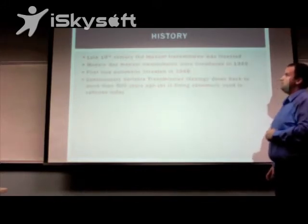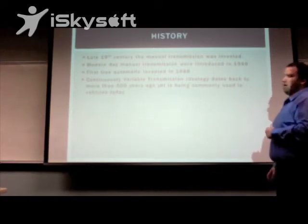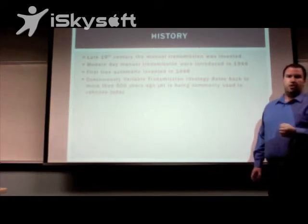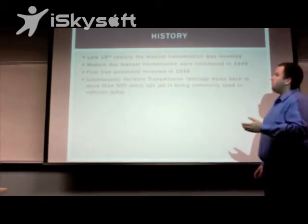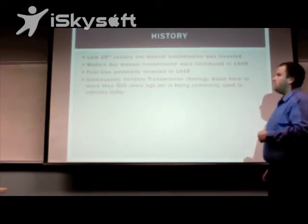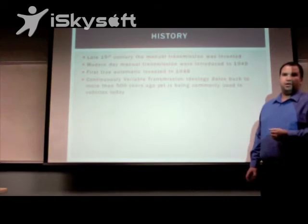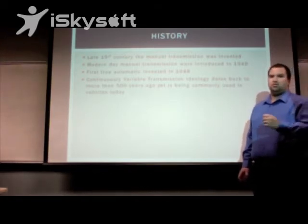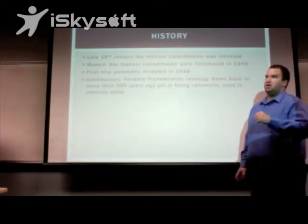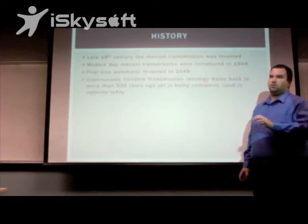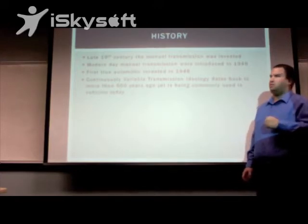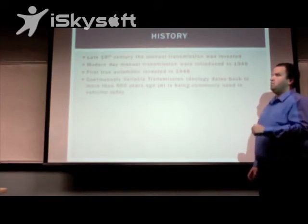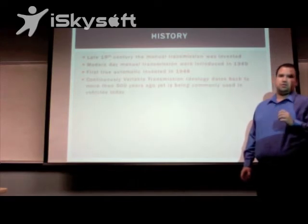The manual transmission had its start as early as the late 19th century, and the modern-day manual transmission as we know it was invented in 1949 when Ferdinand Porsche submitted the patent for the ring-style synchronizer. The first true automatic was made available in the 1948 Oldsmobile and it was called the Hydromatic. It was unique in that it used fluid coupling, planetary gears, and automatic transmission fluid in order to control the gear shifts. Continuously variable transmissions were around since almost 500 years ago, when Leonardo da Vinci made a design and sketch of a CVT transmission.